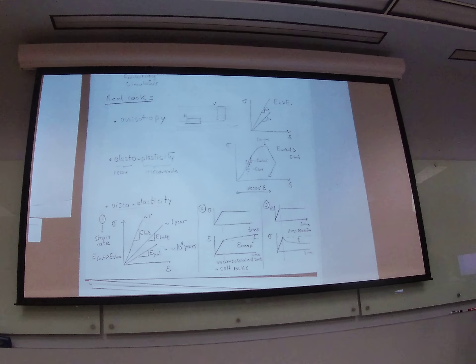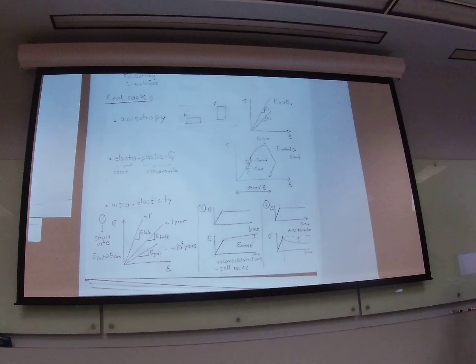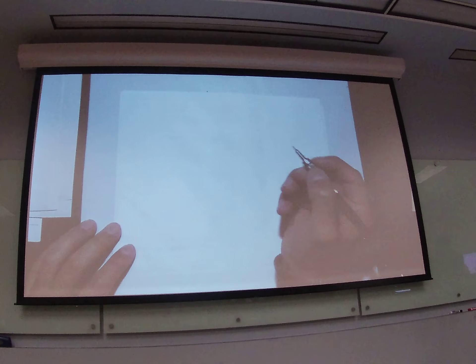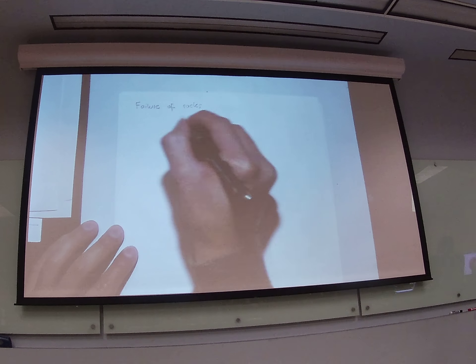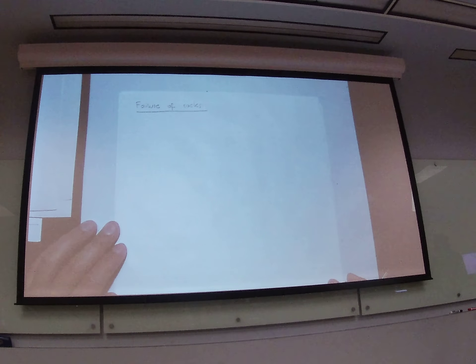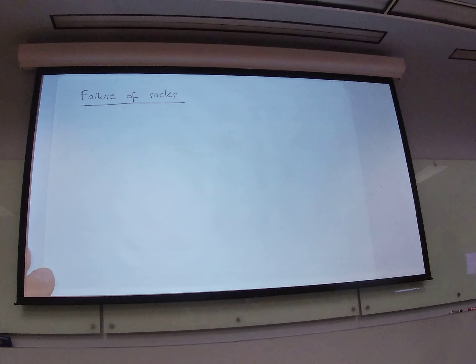So today we have 15 minutes to talk about start talking about failure of rocks. My objective is to finish the topic of failure of rocks by Wednesday next week so you can go into the example. So far we have seen all properties of rocks without breaking them, although you broke some of those in the lab. Now we're going to start to understand how rocks fail. And I can anticipate to you that there are going to be three ways in which the rocks are going to fail. And the first one is going to be a tensile failure.